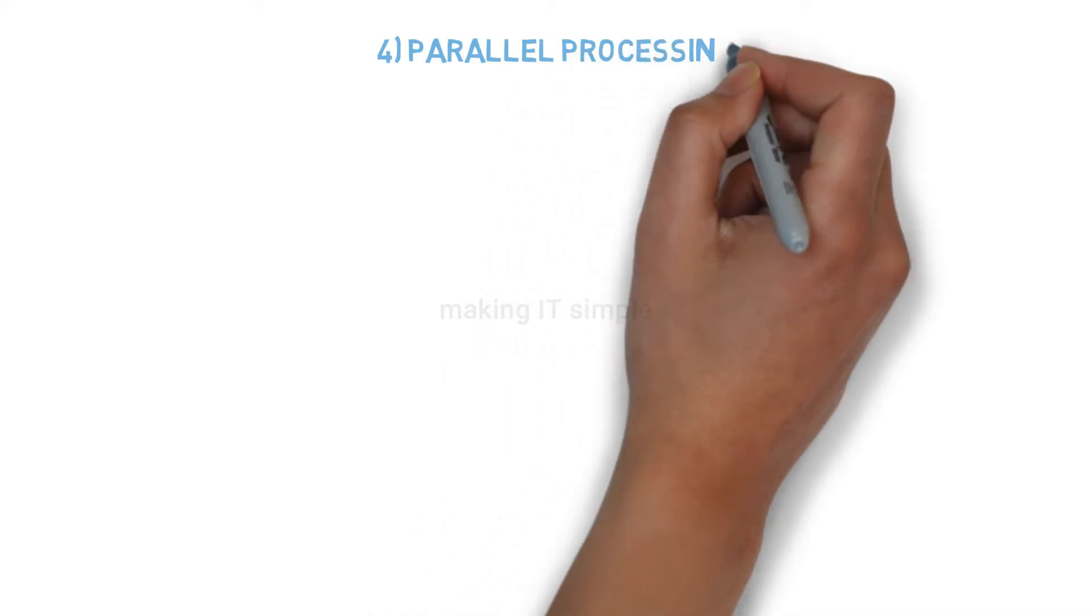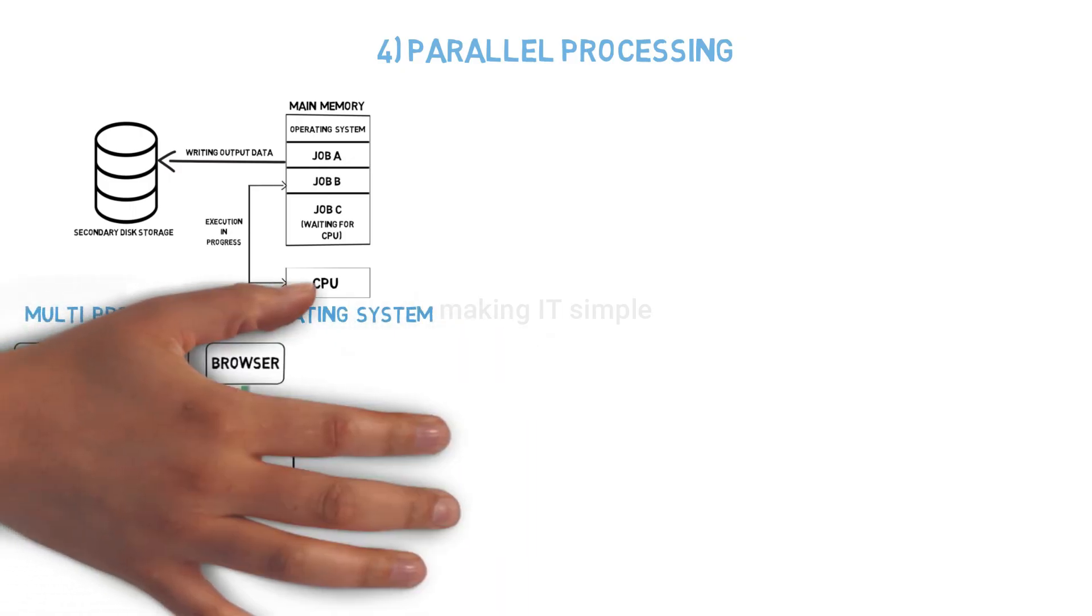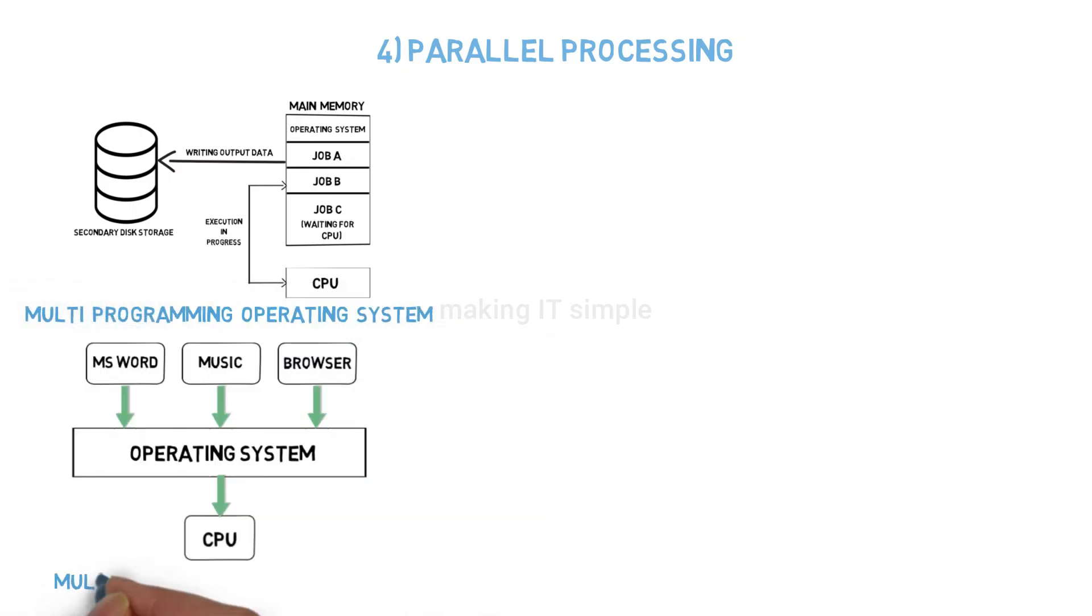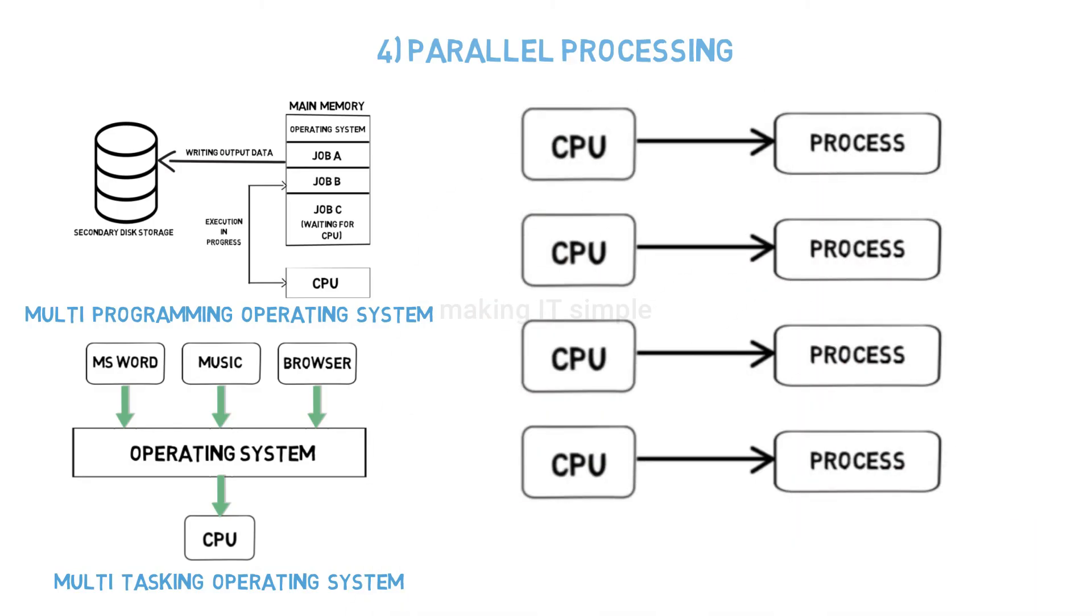Fourth advantage is parallel processing. In multi-programming and multi-tasking, we saw that processor works so fast that we feel like all processes are running parallel. But it works at one process at a time, as one processor can work on only one process at a time. But in multi-processing operating system, we can say that there is parallel processing, as multiple processors work on multiple processes at the same time. So the multi-processing operating system gives parallel processing. These are some advantages of multi-processing operating system.